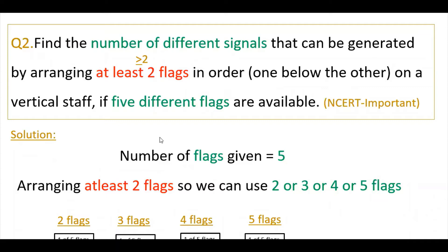Here is the second question. Find the number of different signals that can be generated by arranging at least two flags in order, one below the other, on a vertical strap, if five different flags are available. This is an important problem.